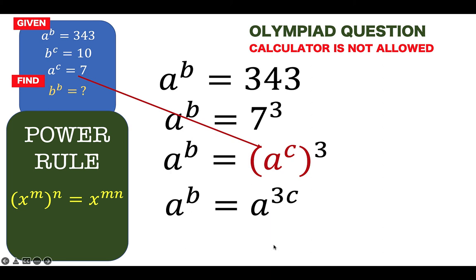Now, since in this equation, the base A at the left side is the same as the base A at the right side, it follows that the exponent B is equal to this exponent 3C. So we arrive at this equation: b is equal to 3C. Now, let's remember these values.